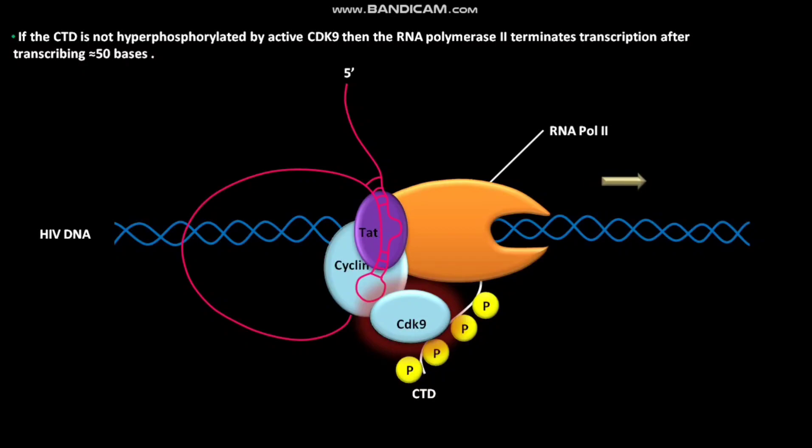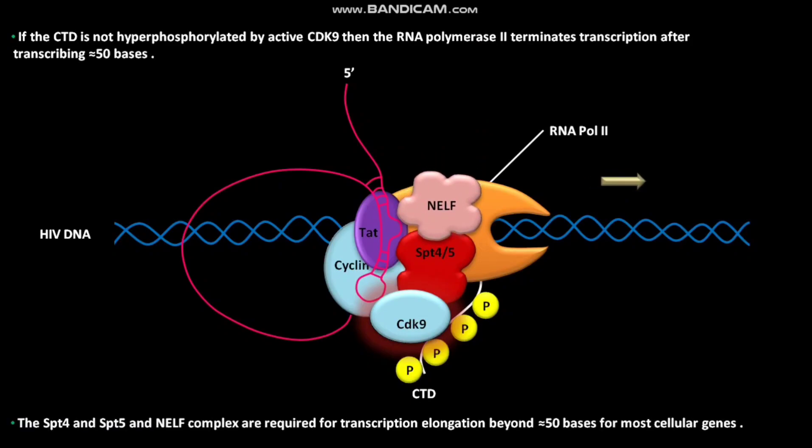Cellular proteins like SPT4, SPT5, and NELF complex are also involved in the regulation of HIV transcript termination. The SPT4, SPT5, and NELF complex are required for transcription elongation beyond approximately 50 bases for most cellular genes.